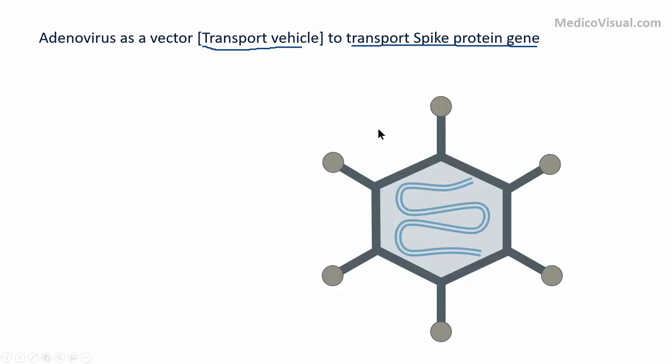Adenoviruses are one of the etiological agents of common cold in humans. There are certain types of adenoviruses. The problem with using adenovirus as a vector is that many people — a huge population of humans — are already immune to the adenovirus. So their immune system can kill the adenovirus before it can transport the spike protein gene into the cell.